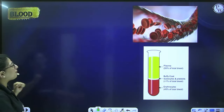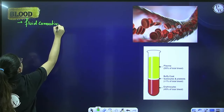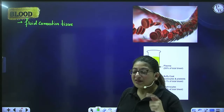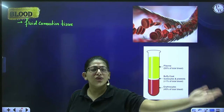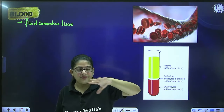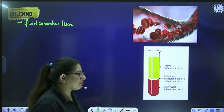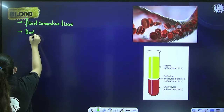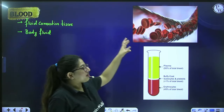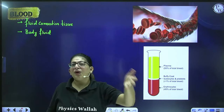Blood is basically a fluid connective tissue. We have done connective tissue in detail before. In the specialized connective tissue category, there was fluid connective tissue — and blood belongs to that. Blood is your body fluid and it performs a number of functions. If you look at animations or images, you can see blood flowing inside blood vessels.